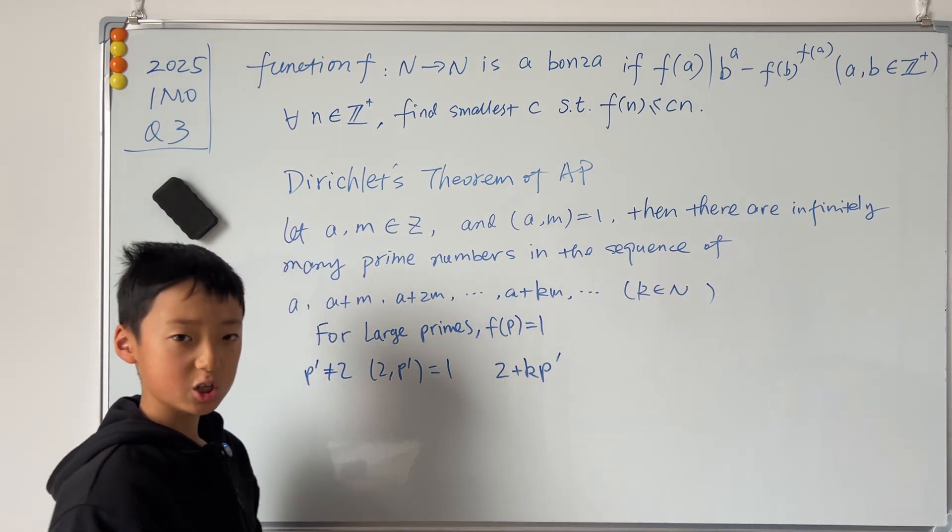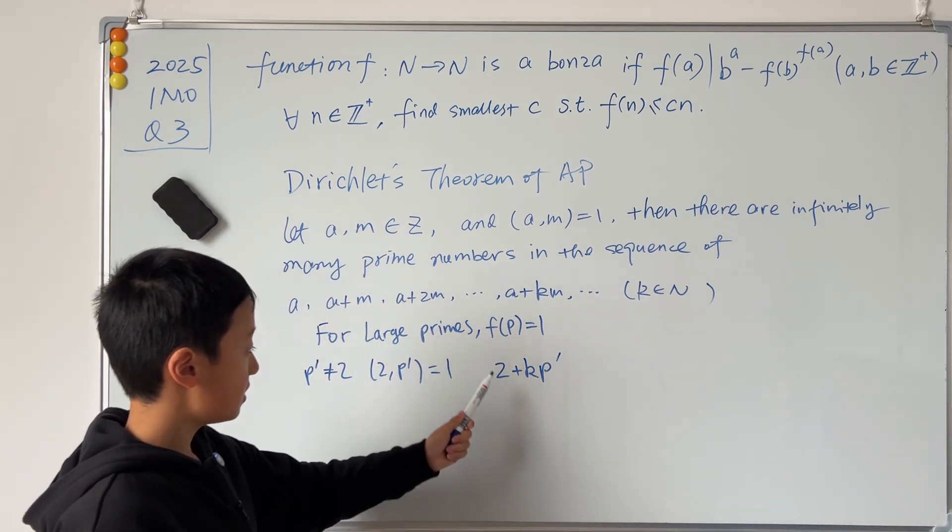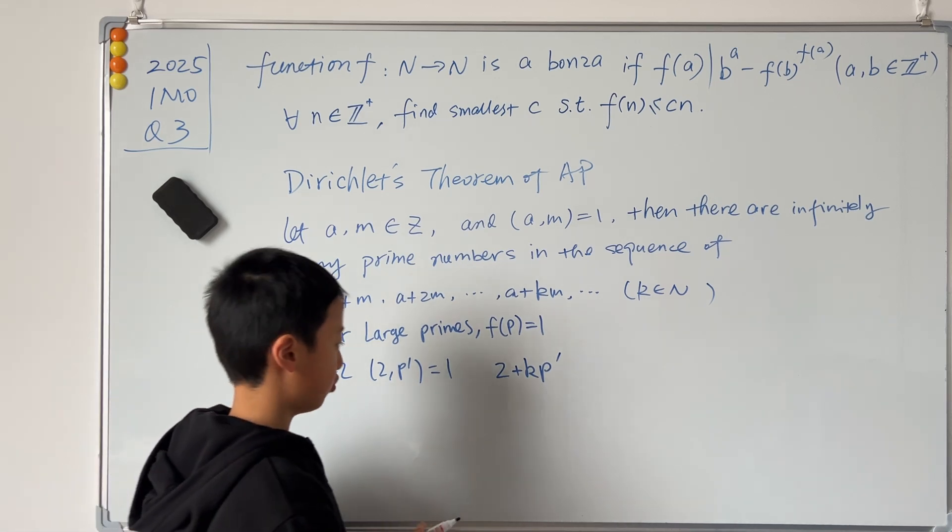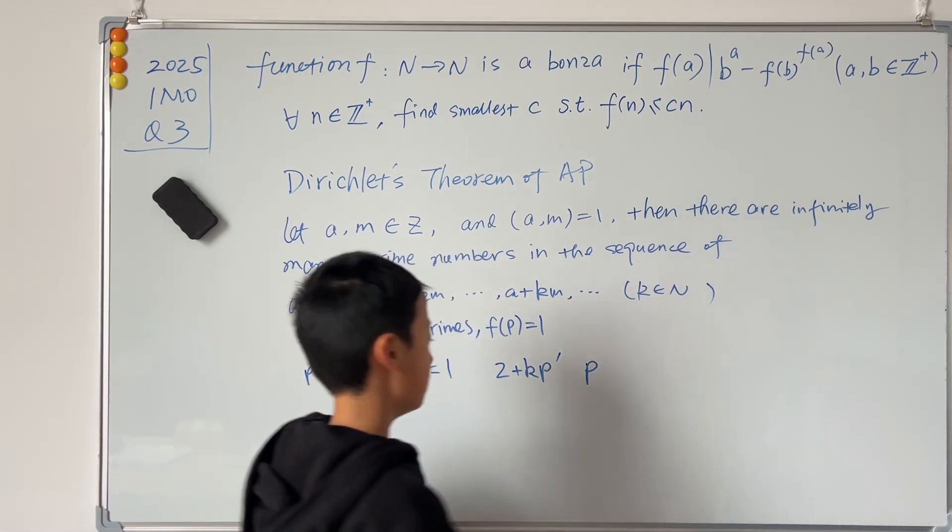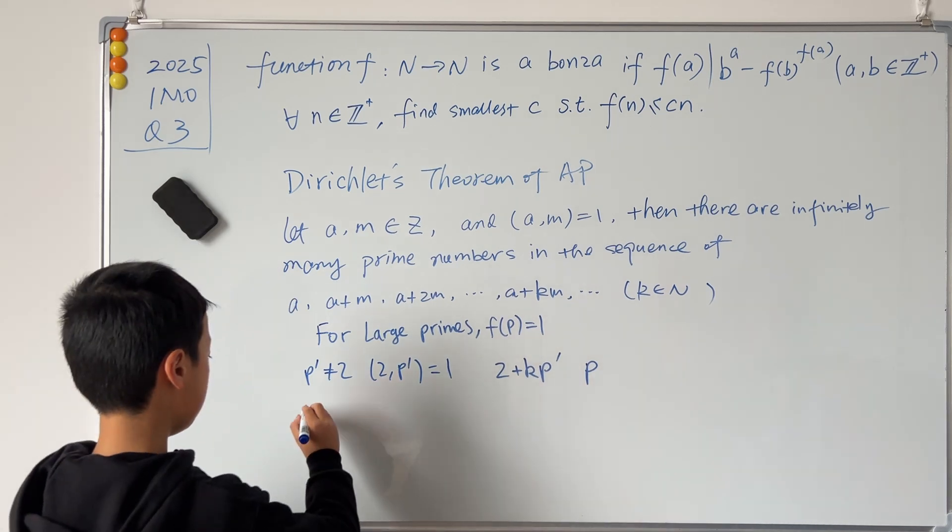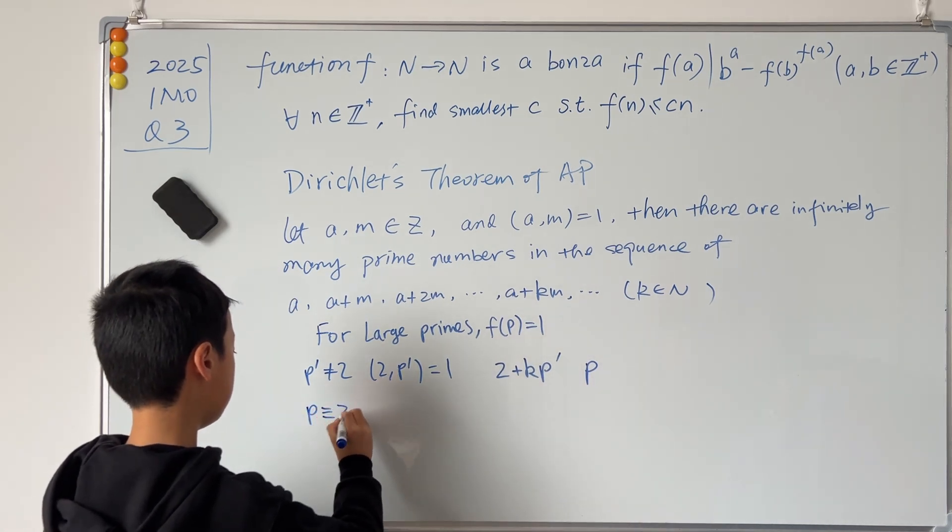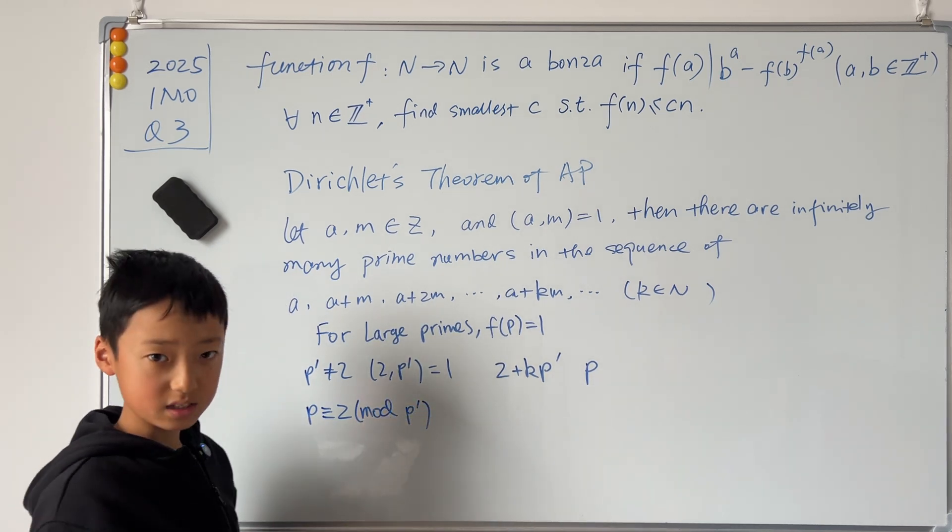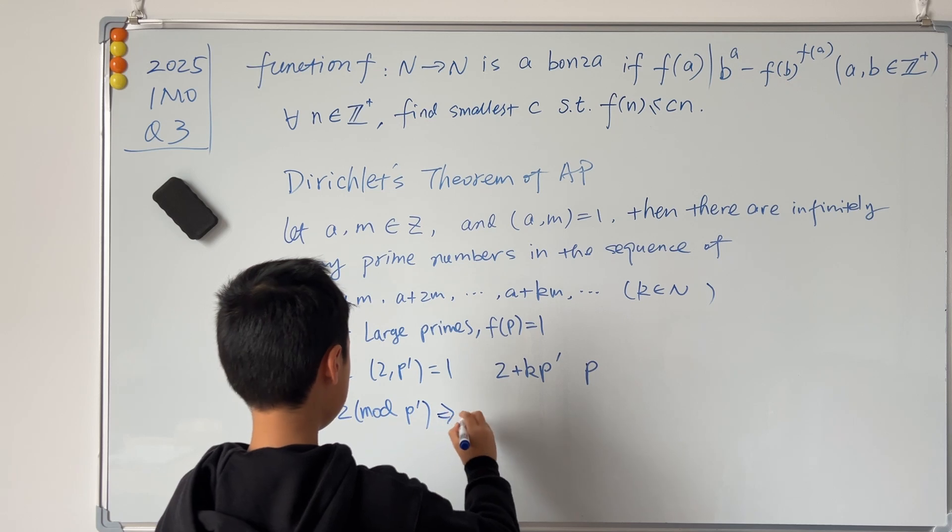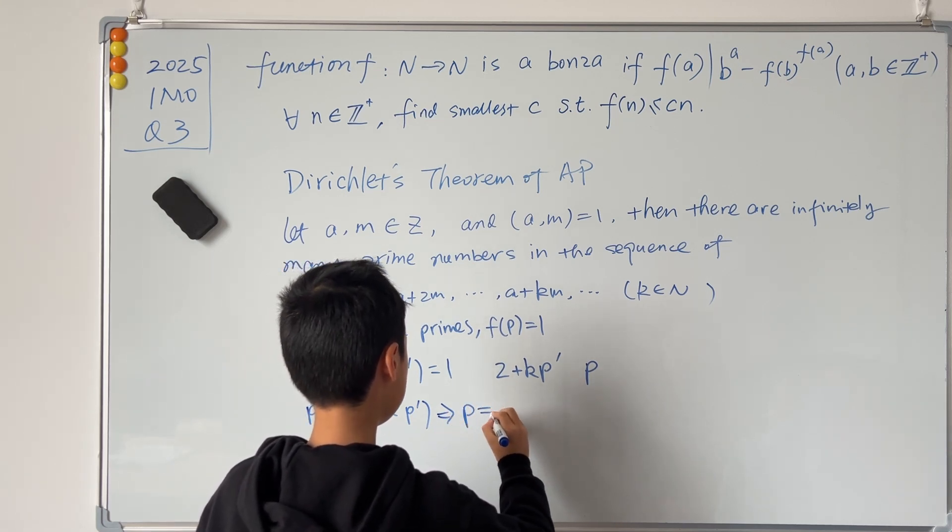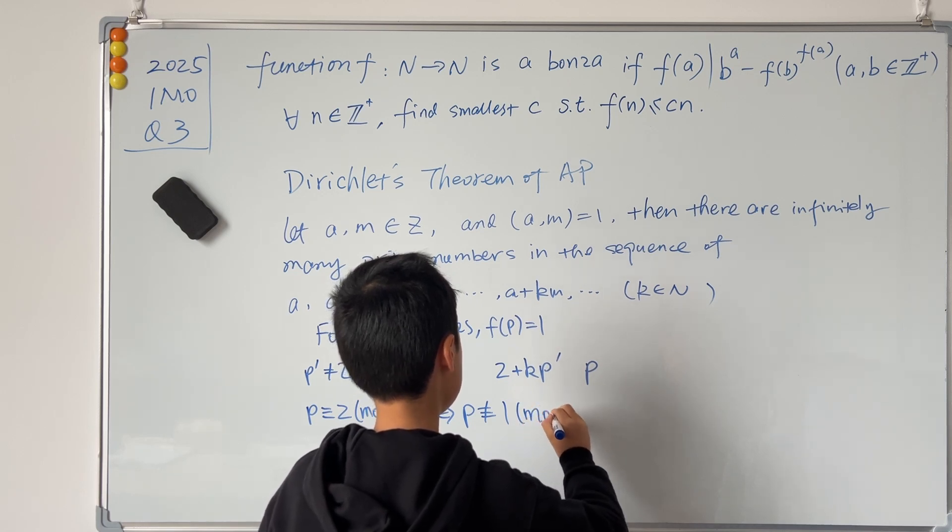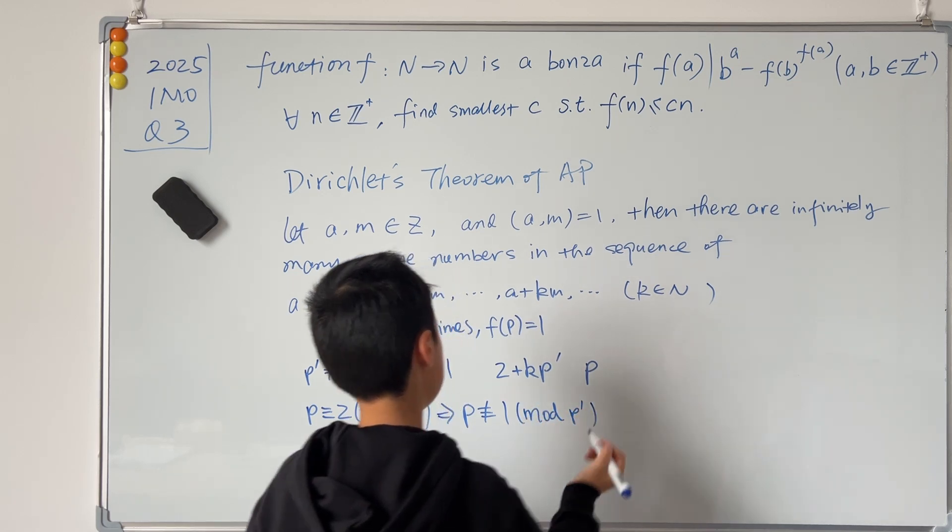So that means in this sequence, we can find a very large prime p such that p ≡ 2 (mod p'). And to emphasize this, this means that p ≢ 1 (mod p'), and this is very important information.